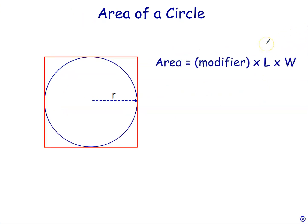Now, what about a circle? I can, in fact, use the same formula for a circle that I just used before, which is area equals modifier times length times width. But finding the modifier is a little bit tricky in this case, so let's see how we go.